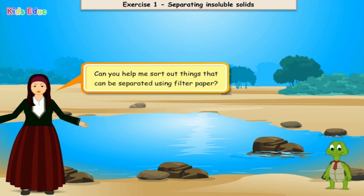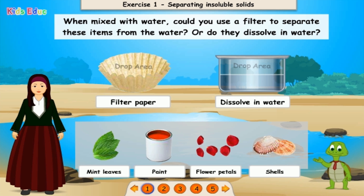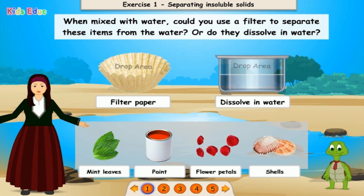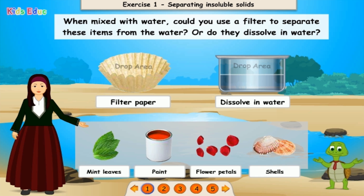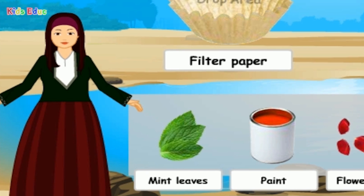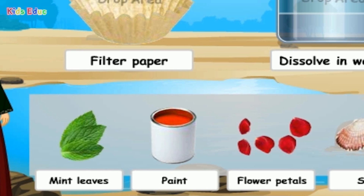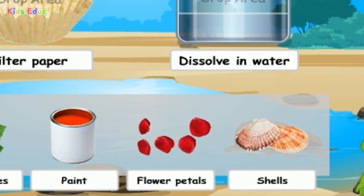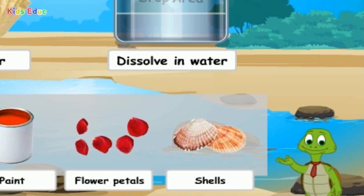Can you help me sort out things that can be separated using filter paper? When mixed with water, could you use a filter to separate these items from the water, or do they dissolve in water? Filter paper. Dissolve in water. Mint leaves. Paint. Flower petals. Shells.